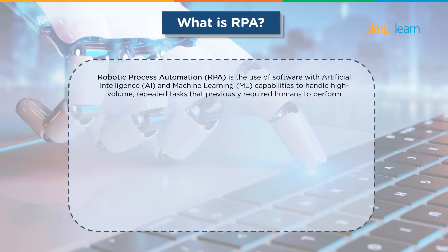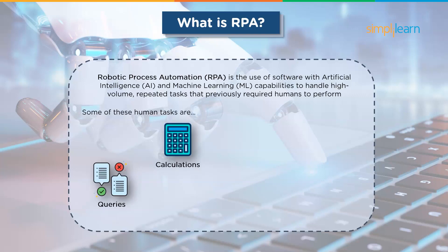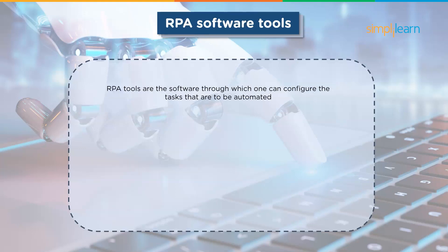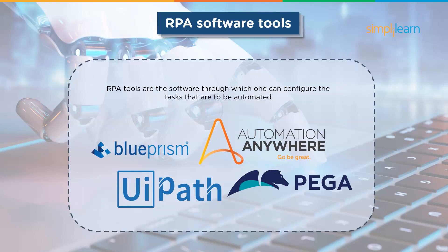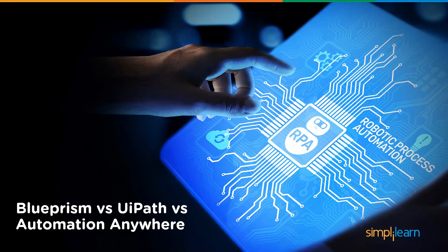So what is RPA? Robotic process automation is the use of software with artificial intelligence and machine learning capabilities to handle high volume repeated tasks that previously required humans to perform. Some of these tasks could include addressing queries, making calculations, maintaining records or even making transactions. RPA tools are the software through which one can configure tasks that are to be automated. Some of the widely used tools are UiPath Studio, Automation Anywhere, Blue Prism, WorkFusion among others.